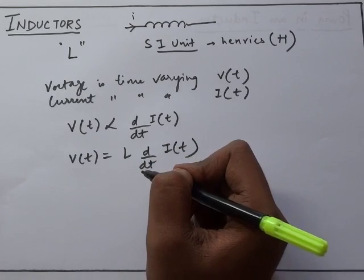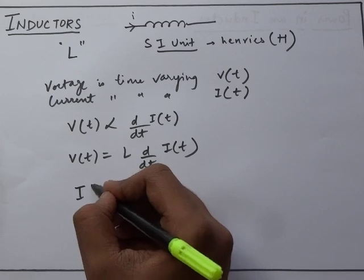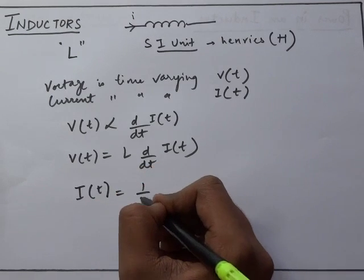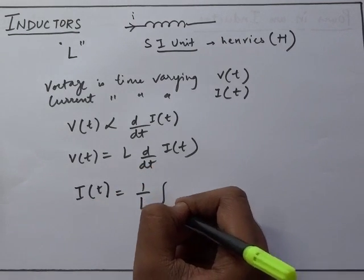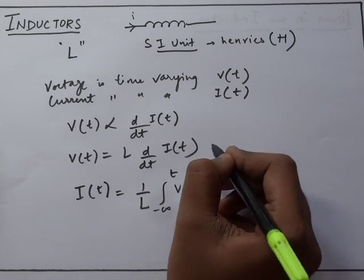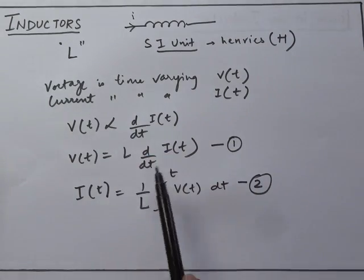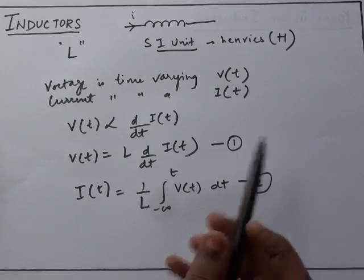If we want to find the value of current, we can simplify this to get an equation: I(t) = (1/L) ∫ from -∞ to t of V(t)dt. So equations 1 and 2, these are two important equations with respect to inductors where voltage and current can be calculated.